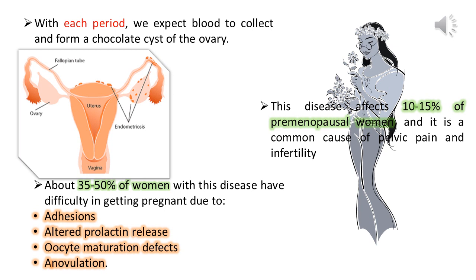This disease affects 10–15% of pre-menopausal women, and it is a common cause of pelvic pain and infertility. About 35–50% of women with this disease have difficulty getting pregnant due to adhesions, altered prolactin release, host-time maturation defects, and ovulation.